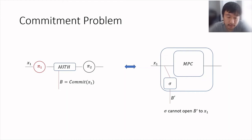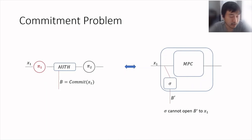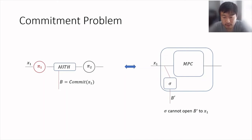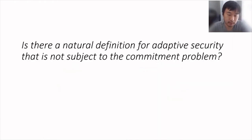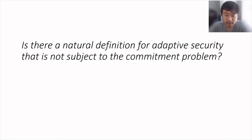This technical issue arises in many scenarios where some form of encryption or commitment is used. As a result, current typical protocols use additional techniques designed to specifically overcome this technical challenge — for example, secure erasable memory, which incurs an additional assumption, or non-committing encryption and equivocal tools, which typically incur an important efficiency loss. In this work we ask whether one can modify the definition and find a natural definition for security against an adaptive adversary that is not subject to the commitment problem.